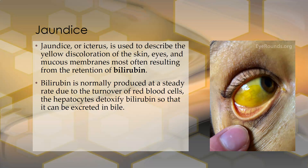Bilirubin is normally produced at a steady rate due to the turnover of red cells. The hepatocytes detoxify bilirubin so that it can be excreted in bile. When you have jaundice, the process is being hampered in some way, or so many red cells have been destroyed that there's a lot of bilirubin that needs to be detoxified. We're going to look at all the ways jaundice can happen, and you have a pretty good picture here of what jaundice looks like.